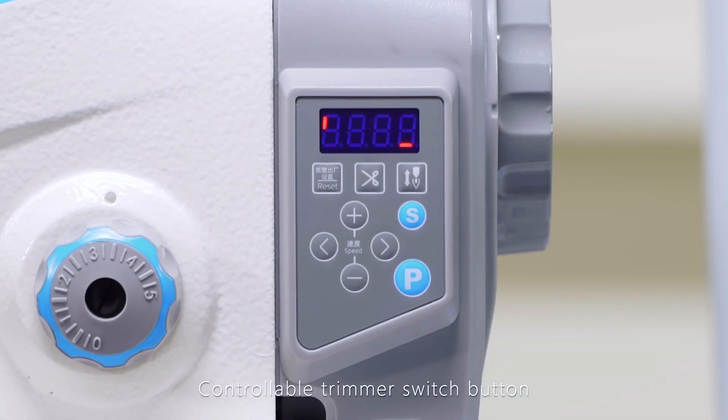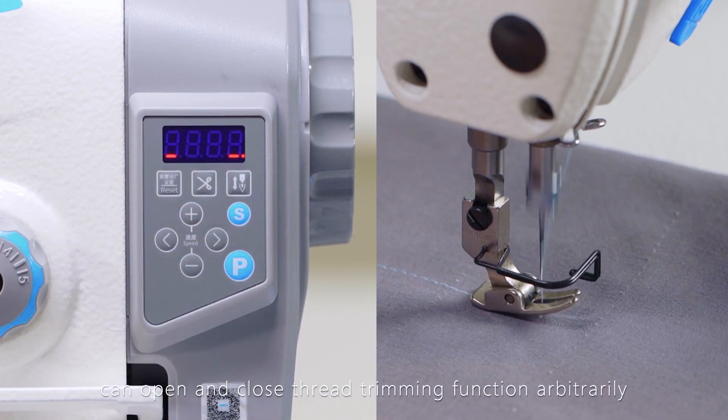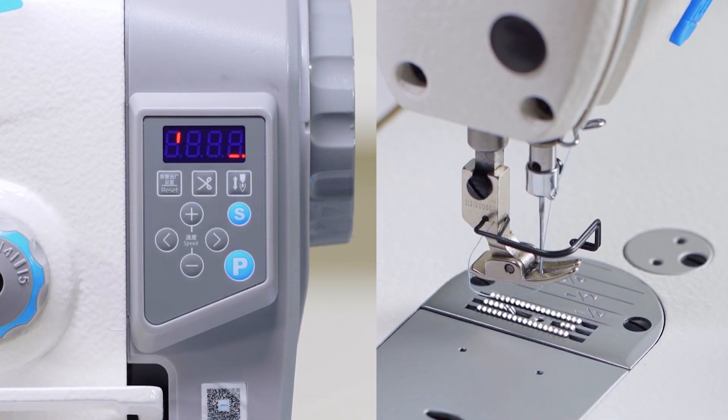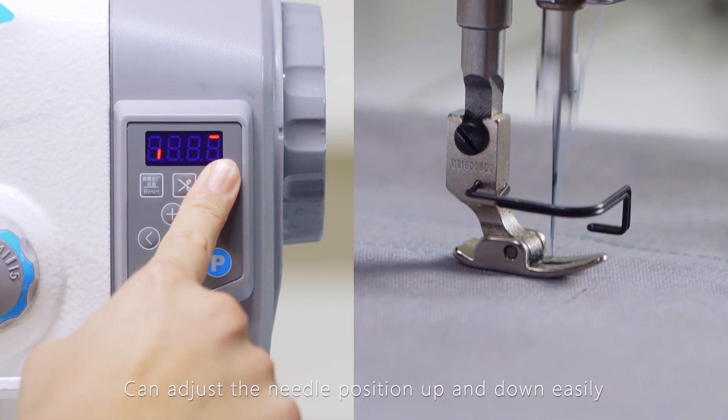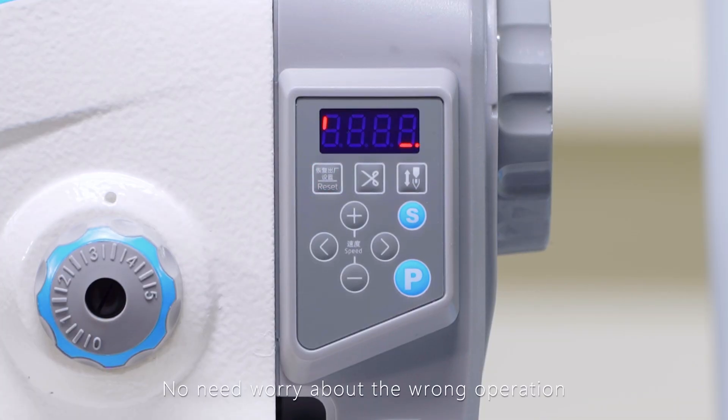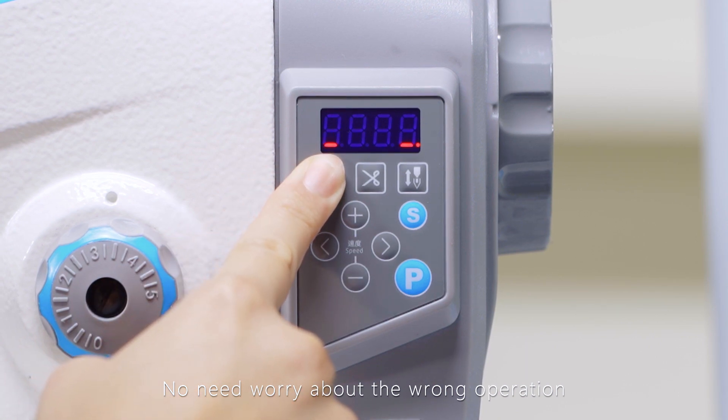Controllable trimmer switch button can open and close thread trimming function arbitrarily. Needle position key can adjust the needle position up and down easily. Reset key - no need to worry about wrong operation.